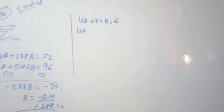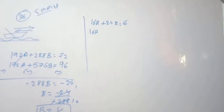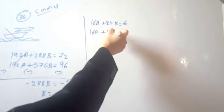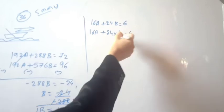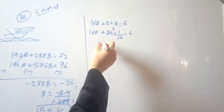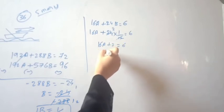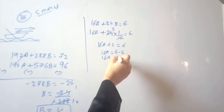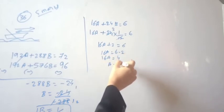Substituting b equals 1/12: 16a plus 24 times (1/12) equals 6. Since 24/12 equals 2, we get 16a plus 2 equals 6. Therefore 16a equals 4, so a equals 4/16 equals 1/4.